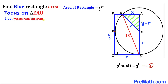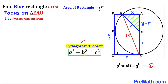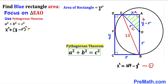Applying the Pythagorean theorem to triangle EAO: a squared plus b squared equals c squared. Here a equals x, b equals y minus r, and c equals r. So we get: x squared plus (y minus r) squared equals r squared.